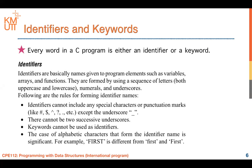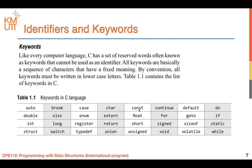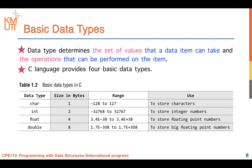The next important thing to review is identifiers. In C programming, if you want to keep or store data, you have to declare variables or identifiers. Identifiers will be different from keywords — you cannot name an identifier the same as a keyword. This is a list of keywords in C programming that you cannot use for your identifiers or variables. In C programming, we have many basic data types. You have four basic data types in C: char, int, float, and double.